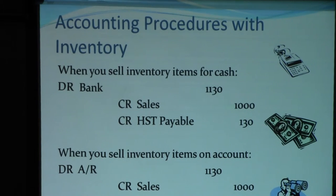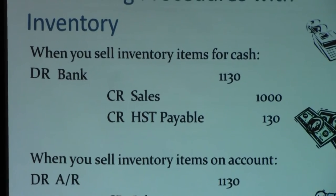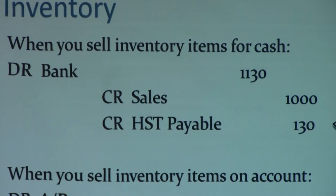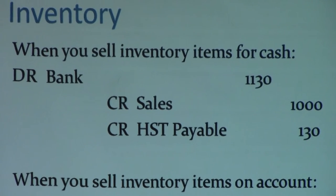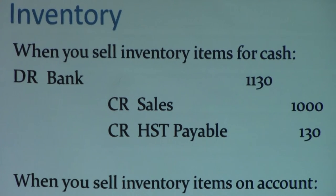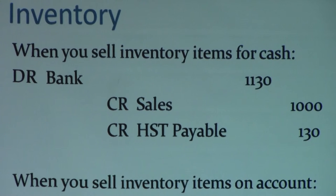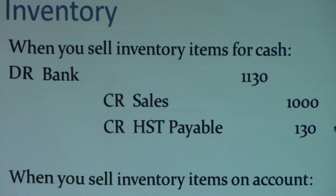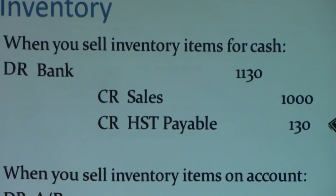When you actually sell inventory, the entire purpose being to buy and then sell: you've received cash, and part of that goes to HST payable. For example, debit bank $1,130, credit HST payable $130, and credit sales $1,000. You've been recording these entries since the beginning. You credit the sales or revenue account, credit HST payable, and debit either bank or accounts receivable depending on whether they paid cash or are paying on account.